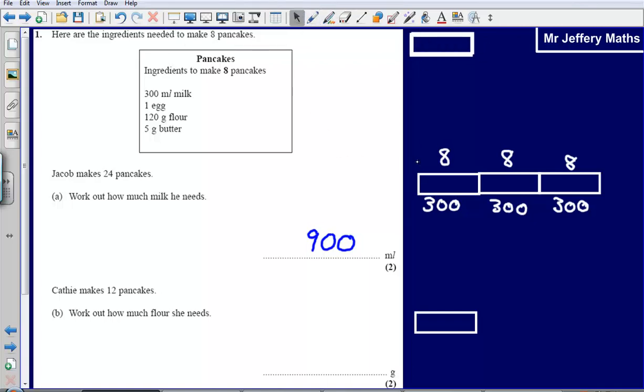Okay, question B tells me that Kathy makes 12 pancakes, work out how much flour she needs. So again, I'm just going to say that this bar is going to represent my 8 pancakes, the ingredients that I'm told at the beginning. How much flour do I need? Well, to make 8, I need 120 grams.